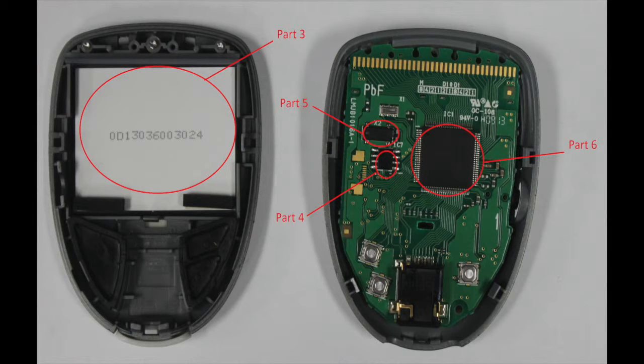This is how the circuit board communicates to the LCD screen. The parts labeled Part 5 and Part 4 are both resistors. Part 6 is the main processing center of the circuit board.